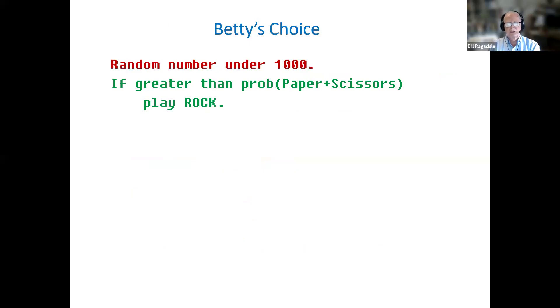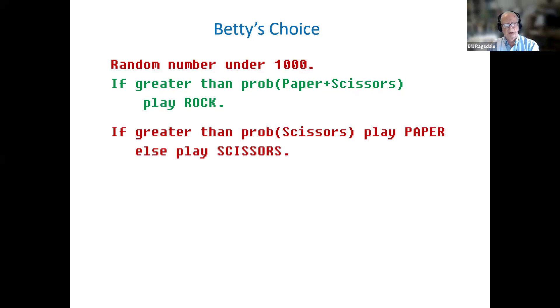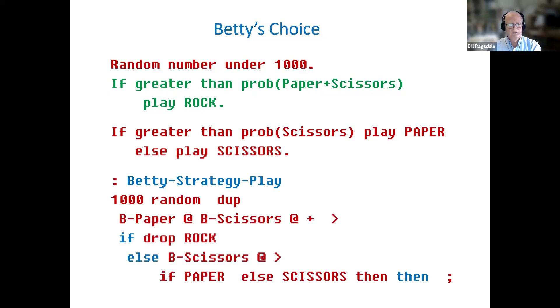The probabilities are normalized to 1, which is equal to 1,000. This avoids having to use floating point. And so Betty's choice is that she will be looking at the probability of a paper plus scissors in which to play rock. If that probability is greater than the probability of scissors alone, she will play paper, else play scissors. Don't worry about that. The math takes care of those choices.